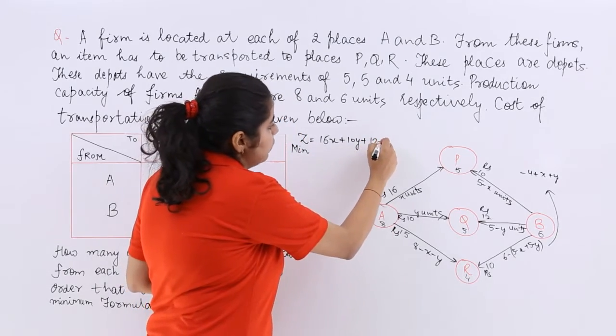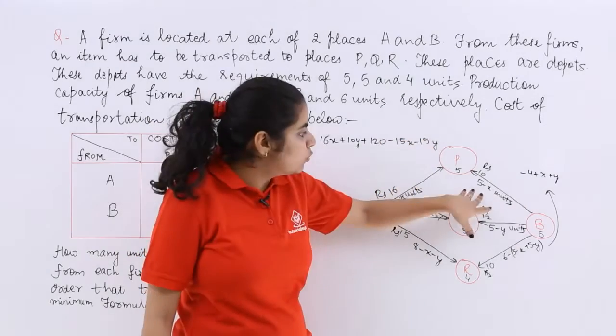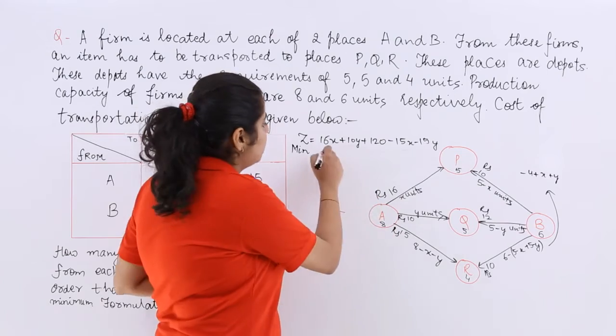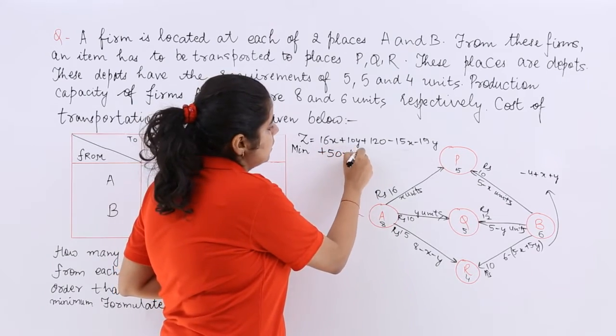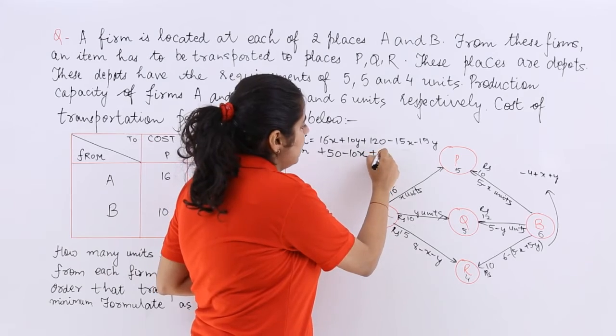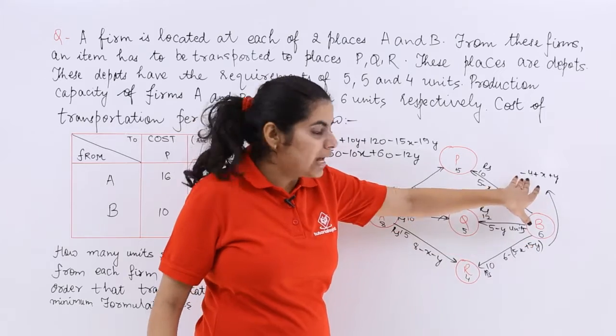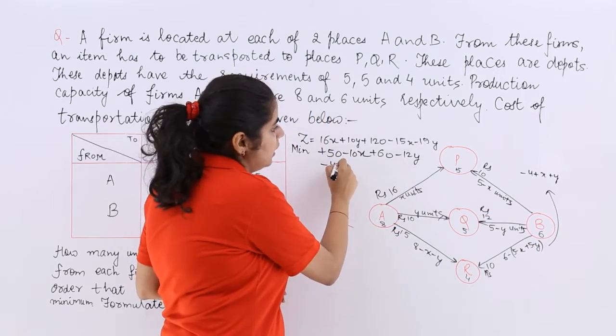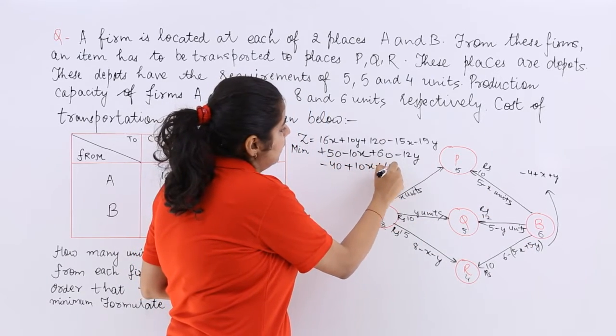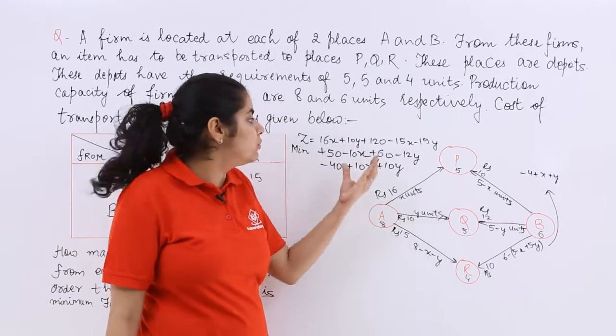So 15×8 is 120, then minus 15X minus 15Y. Next we have to move on to this factor. Now 10 into 5 is 50 minus 10X. Then here is 12×5 is 60 minus 12Y. Then here it is 10 multiplied by minus 4 which is minus 40 plus 10X plus 10Y. So let's cancel whatever cancels and let's reach the final Z.